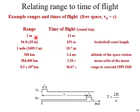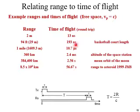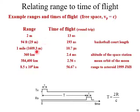Relating range to time of flight: if the range is 2 meters, time of flight is about 30 nanoseconds. If the range is nearly 29 meters — the length of a basketball court — it is 193 nanoseconds. At 384,400 kilometers — the mean orbit of the moon — the round trip time will be 2.56 seconds. In this way, you can understand the variation of range with time of flight.